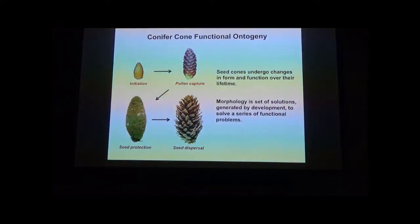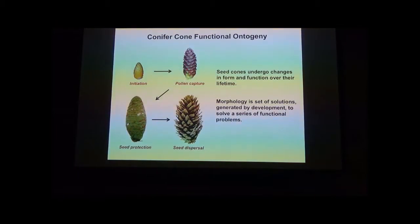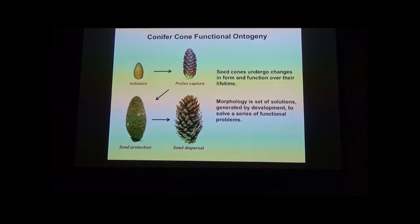I want to make sure we understand what conifer cones actually do—they're not just a simple seed-enclosing device. A cone is initiated as a bud, then has a functional stage where it captures pollen, since all conifers are wind-pollinated. After pollination, the open structure closes to protect the developing seeds. Then at some point it has to open up and disperse those seeds. So cones have these different, sometimes diametrically opposed functional roles—capturing pollen, protecting seeds, and dispersing seeds—performed over their lifetime.